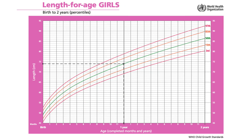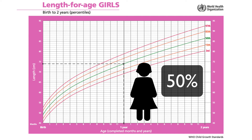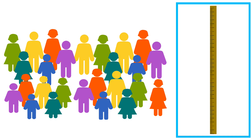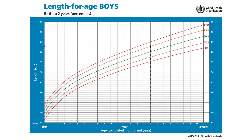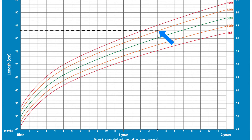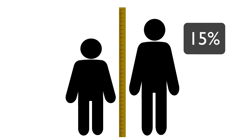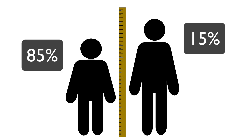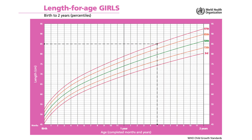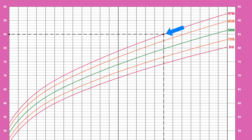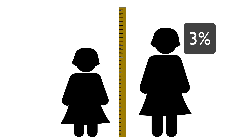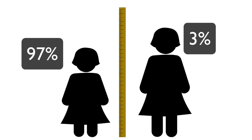In this graph, Priya's length is plotted on the fiftieth percentile line, meaning the length of fifty percent of children is on this line — therefore Priya's length is the average for children her age. Rohan's length is plotted on the eighty-fifth percentile line, meaning fifteen percent of children his age are taller than him. Fatima's length is plotted on the ninety-seventh percentile, meaning three percent of children her age are taller than her and ninety-seven percent are shorter.